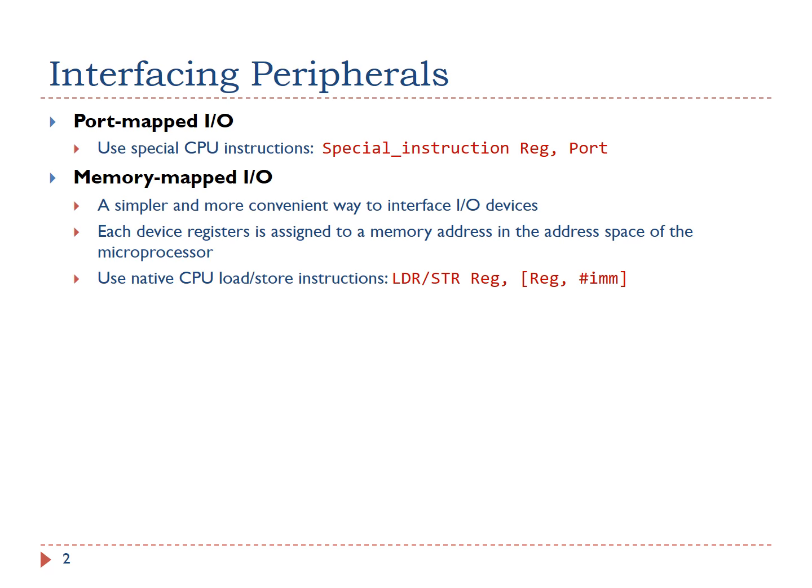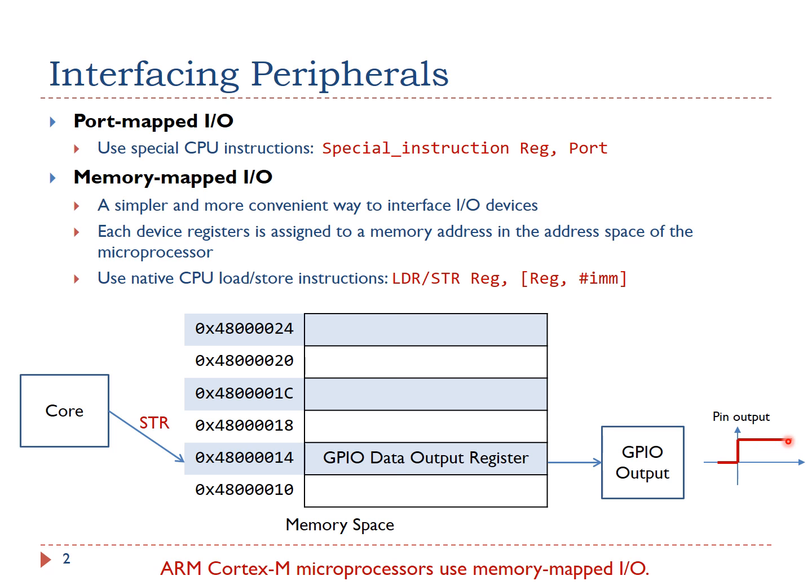Here is an example of Memory Mapped I/O. Suppose we want to set the output of a GPIO pin to high. Software can use the store instruction STR to set the corresponding bit in the GPIO data output register to 1. When you write to this special memory location, the data you write is sent to the corresponding I/O device.